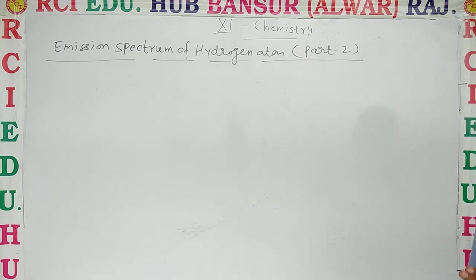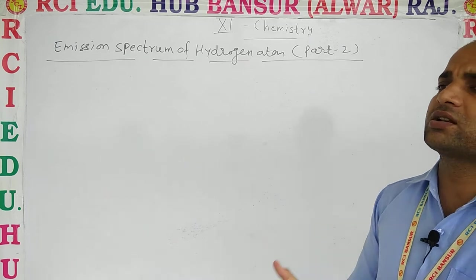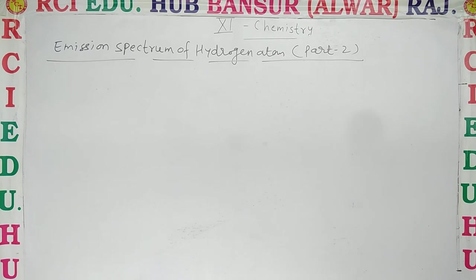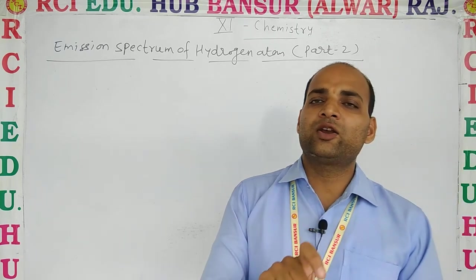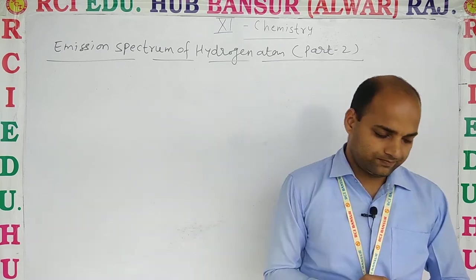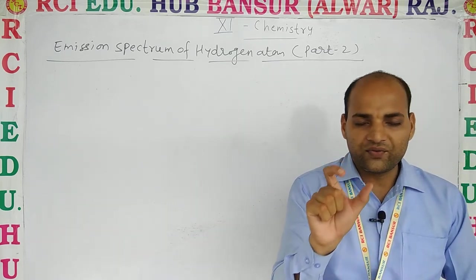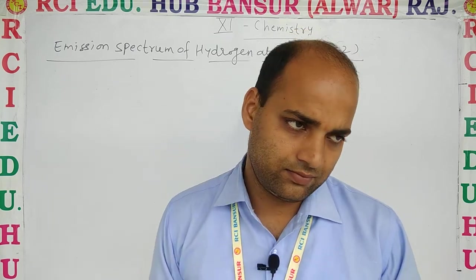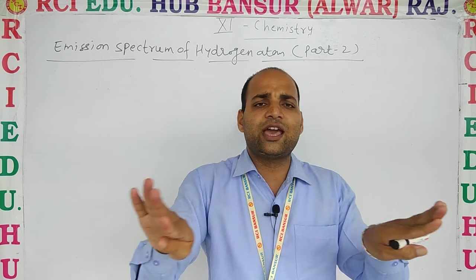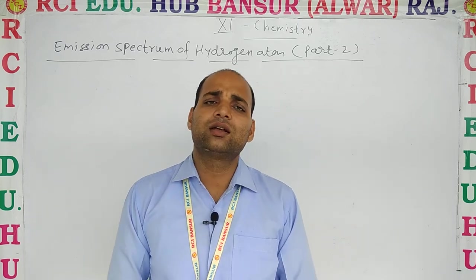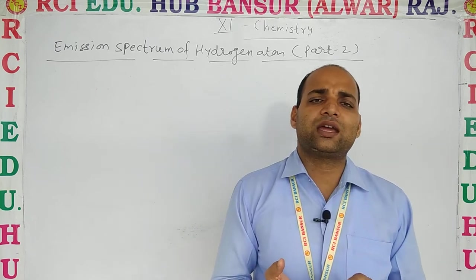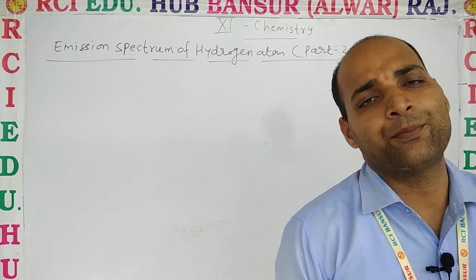In the previous class, we discussed the first part of the emission spectrum of the hydrogen atom, in which we obtained different types of hydrogen spectral lines according to their wavelength region — Lyman, Balmer, Paschen, Brackett, Pfund, and Humphrey.